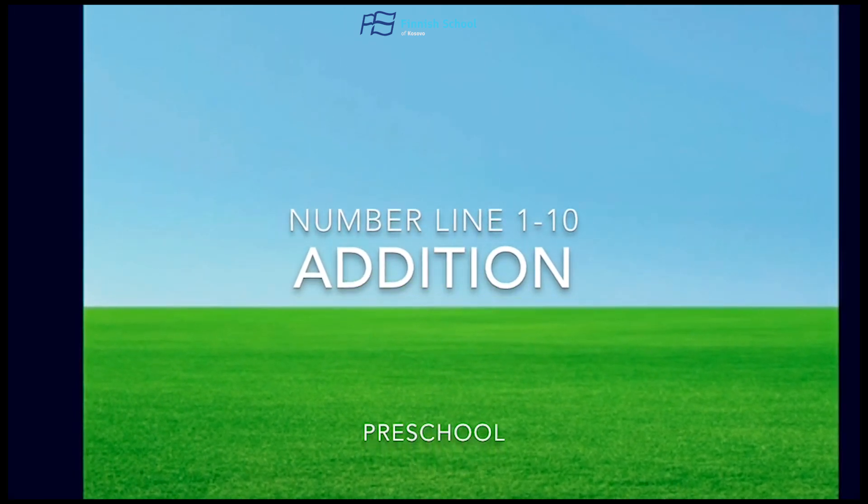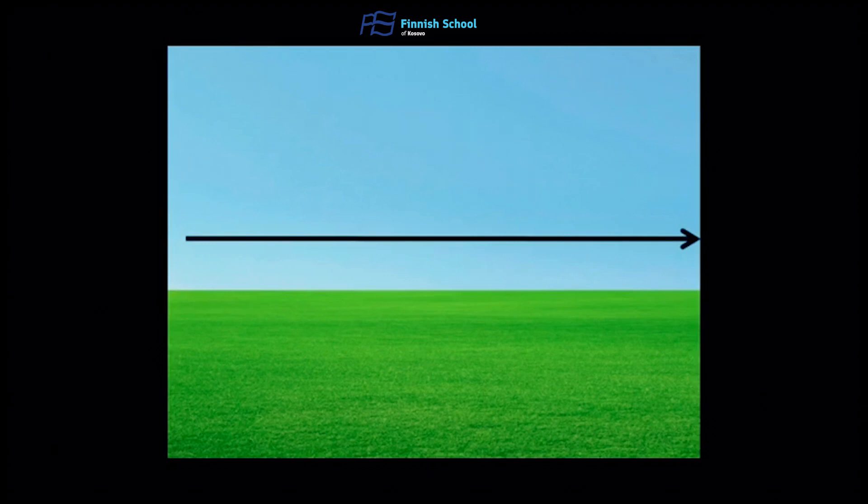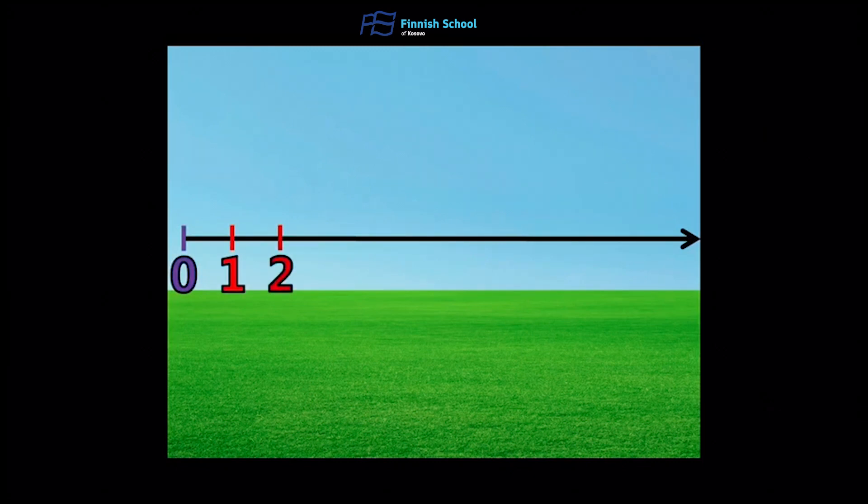Today we are going to learn about number line 1 through 10 and addition. A number line has numbers from 0 to 10, so we start at 0, 1, 2, 3, 4, 5, 6, 7, 8, 9, and number 10.